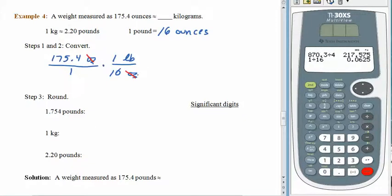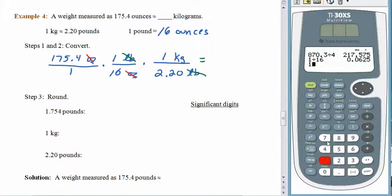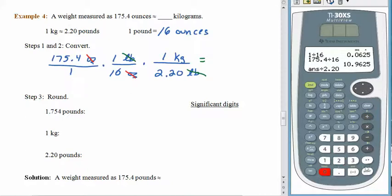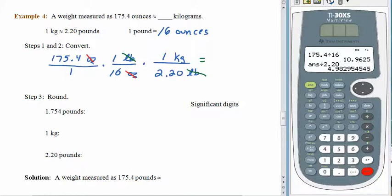The units of ounces cancel. If we stopped here we'd have pounds, but we don't want pounds. So we use 1 kilogram equals 2.20 pounds, putting 2.20 pounds in the denominator so the common units cancel. Pounds cancel with pounds. Then we calculate: 175.4 divided by 16, then divided again by 2.20, giving us 4.982... kilograms.